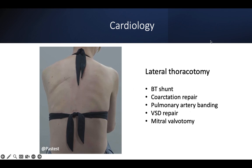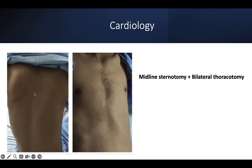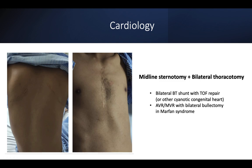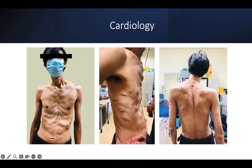A lateral thoracotomy scar in cardiology can suggest BT shunt, coarctation repair, pulmonary artery banding, VSD repair, or mitral valvotomy — possibilities for repaired congenital heart without midline sternotomy. For bilateral thoracotomy with midline sternotomy: first possibility is bilateral BT shunt with Tetralogy of Fallot — most common in exam. Second possibility: if the patient has Marfanoid features, bilateral thoracotomy could be bullectomy from recurrent pneumothorax, and midline sternotomy could be mitral valve repair for mitral valve prolapse, or aortic regurgitation from Marfan's with mechanical valve surgery.